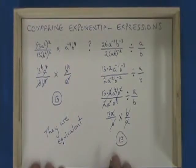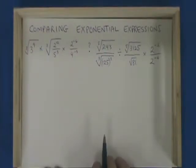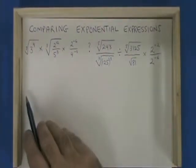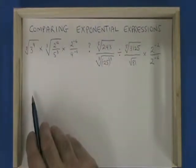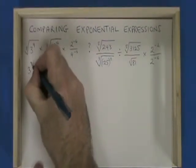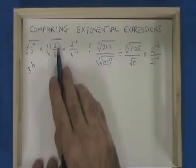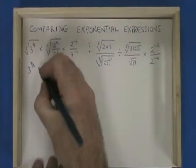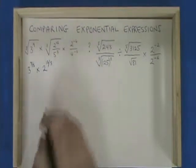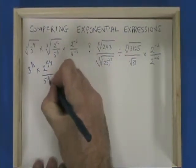This is how we compare two exponential expressions. In this example, I have a cube root of 3 to the power of 9. I'm going to convert that into exponential form and I get 3 to the power of 9 thirds. The cube root of this fraction is going to give me 2 to the power of 12 thirds over 5 to the power of 3 thirds.